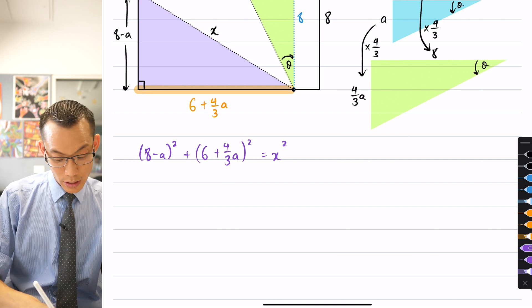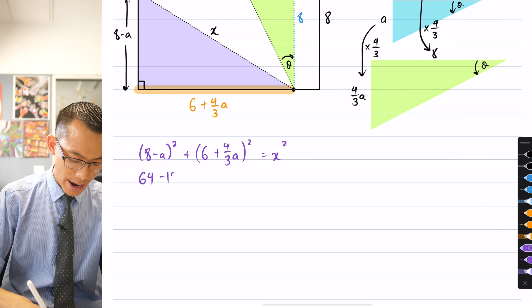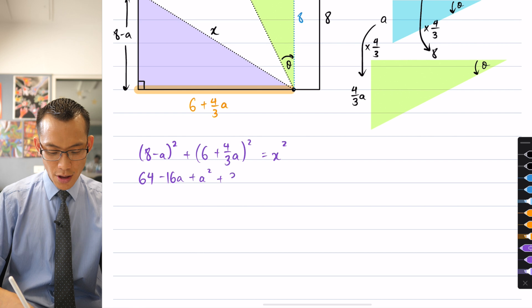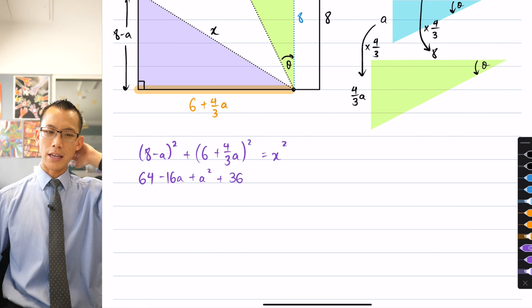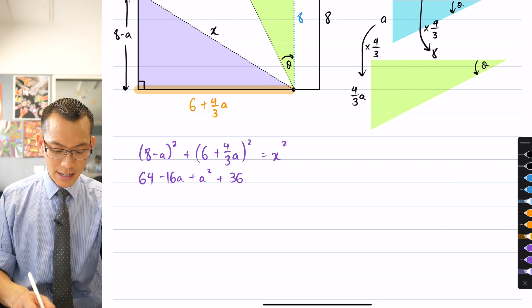I can say, well, let's just simplify this out. I'll expand, gives me 64 take away 16 A plus A squared. And then I'm also going to have 36. Just be careful here.